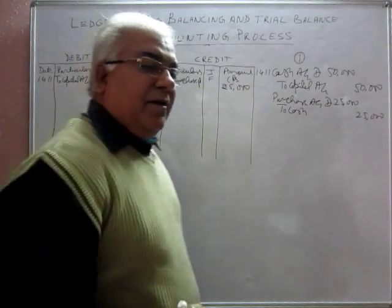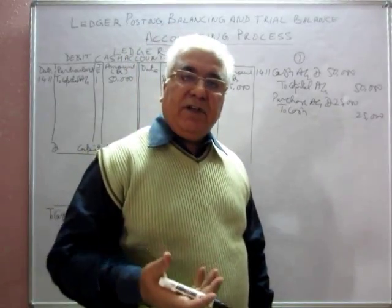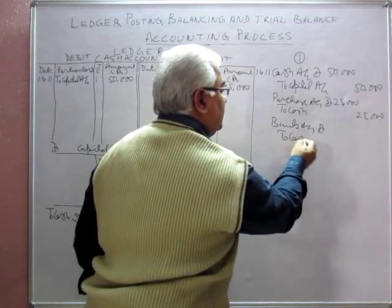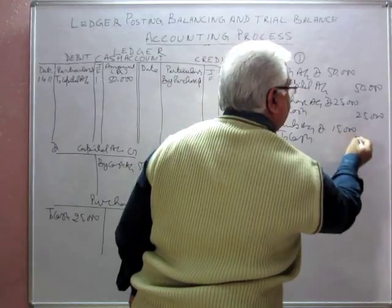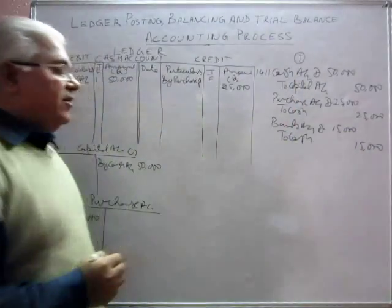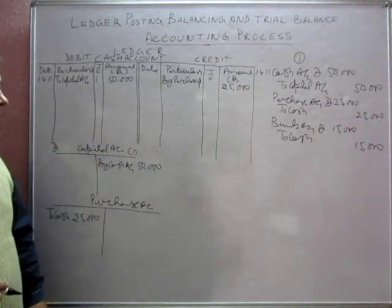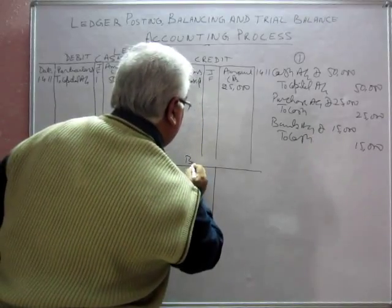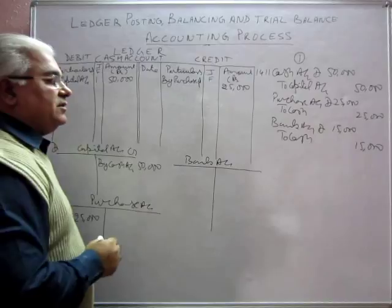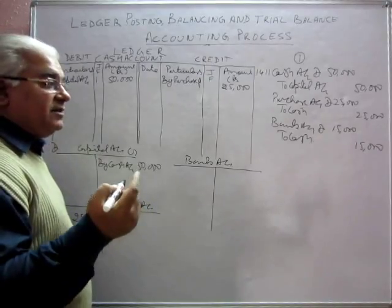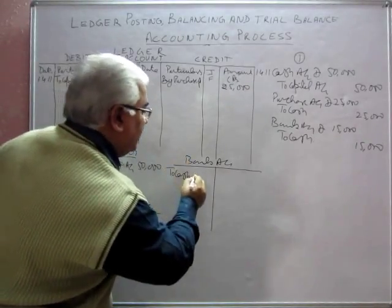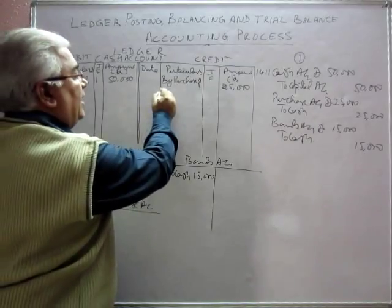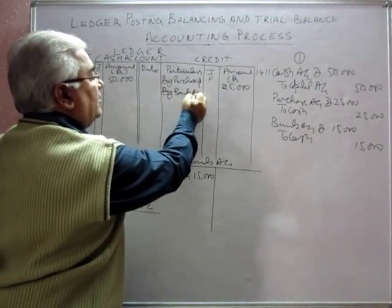Our third entry: bank account debited to cash, 15,000 — meaning we deposit cash in the bank. Bank account is being debited and cash account is being credited. So in the bank account we write 'To Cash, 15,000', and in the cash account we write 'By Bank Account, 15,000'.